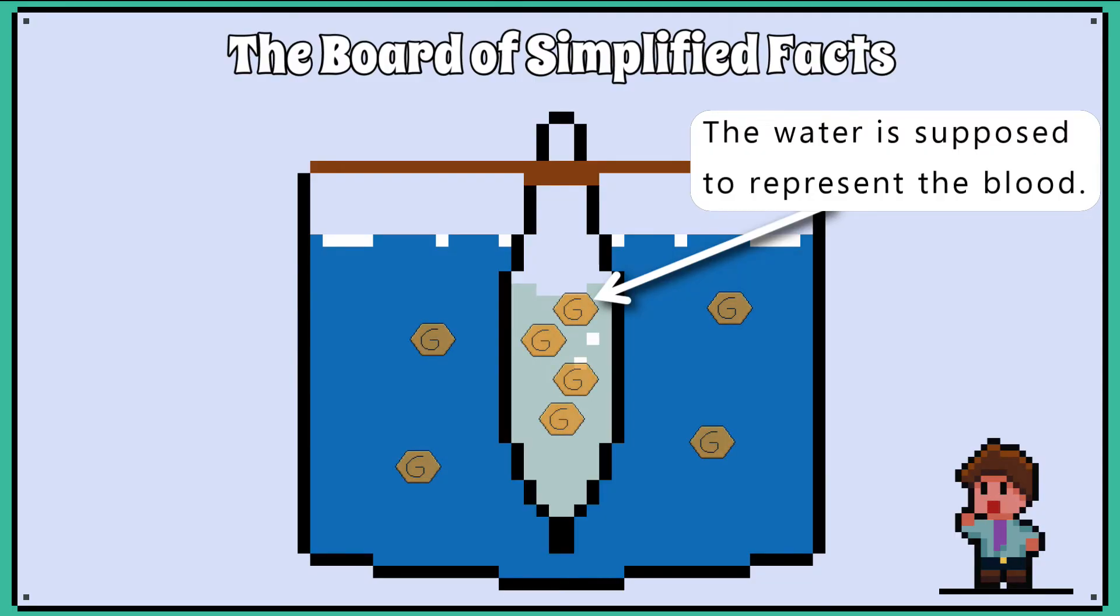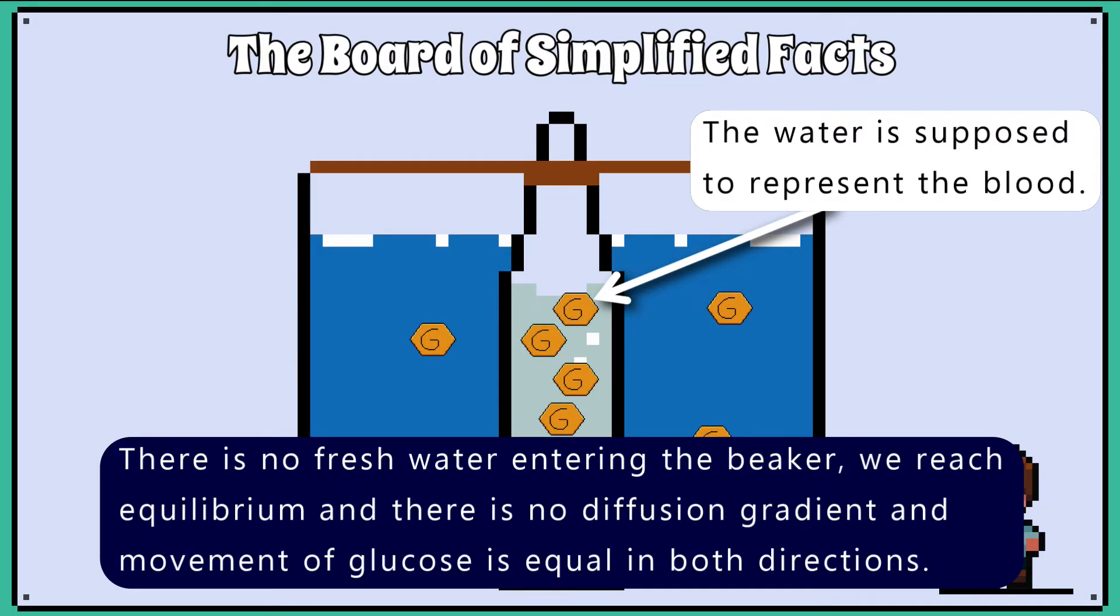The other limitation is that water is supposed to be representing the blood, but as there is no fresh water entering the beaker, we reach equilibrium and there is no diffusion gradient, and therefore there is no net movement of glucose in either direction.